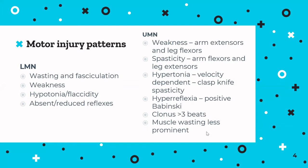Lower motor neuron signs include wasting and fasciculations, targeting specific muscles rather than groups like extensors or flexors, since this is happening outside the CNS. Patients tend to present with weakness — quite floppy and flaccid — with absent or reduced reflexes depending on the degree of underlying pathology.